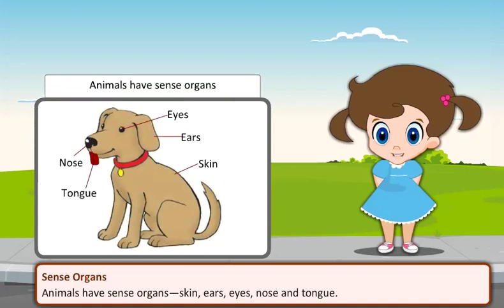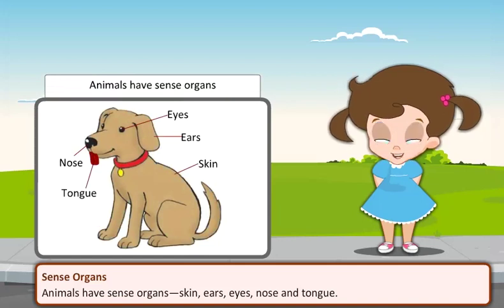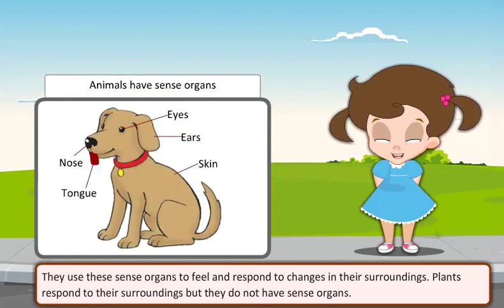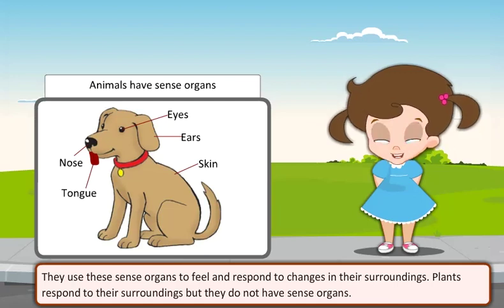Animals have sense organs — skin, ears, eyes, nose and tongue. They use these sense organs to feel and respond to changes in their surroundings. Plants respond to their surroundings but they do not have sense organs.